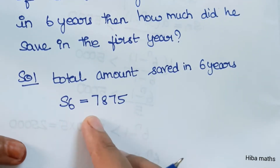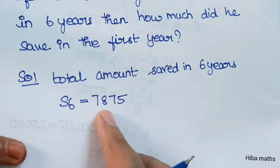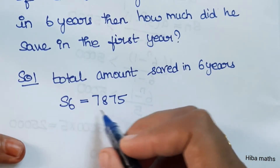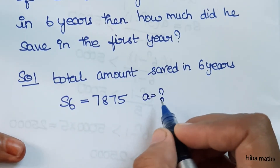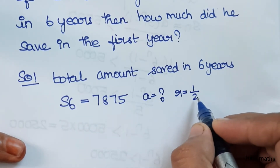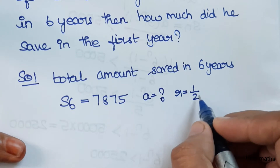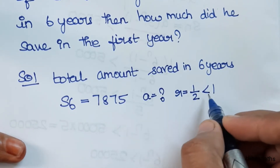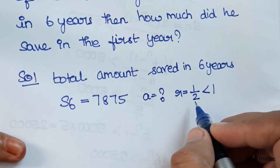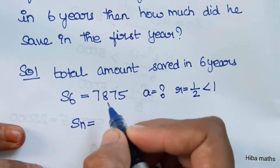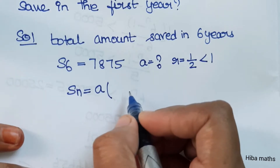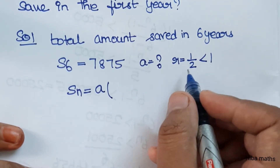The total amount saved in 6 years is $7,875. How much did he save in the first year? The common ratio r is 1/2, and since 1/2 is less than 1, we need to identify which S_n formula to use.